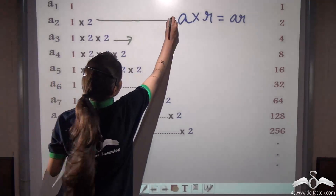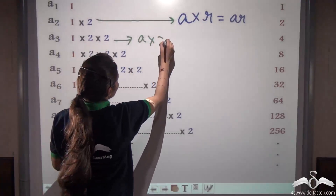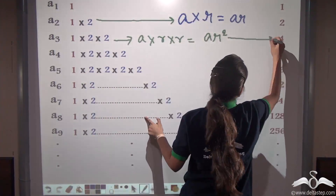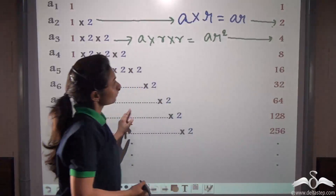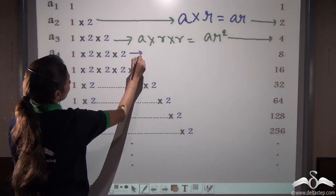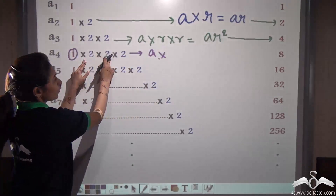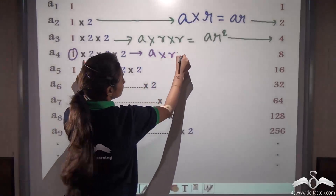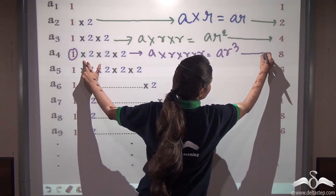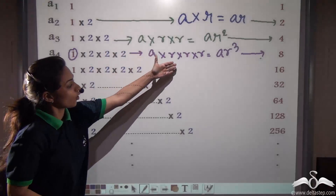For the third term, we have A into R into R, that is A·R squared. Similarly, for the fourth term, A into R into R into R, that is A·R cubed. So you can now write all these terms yourself.